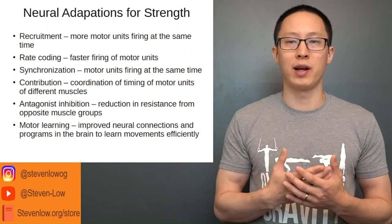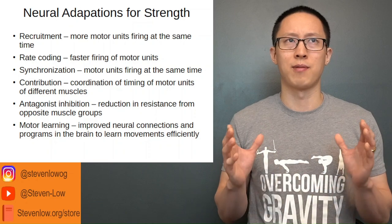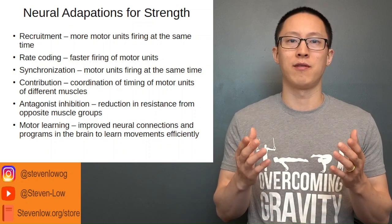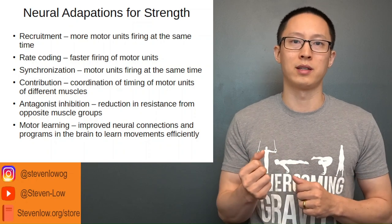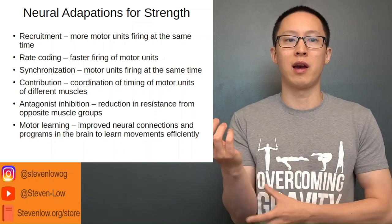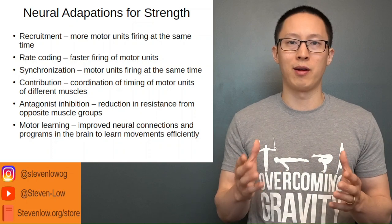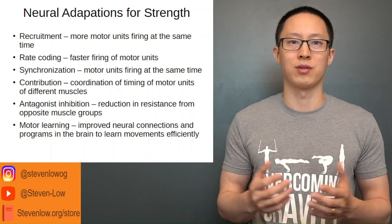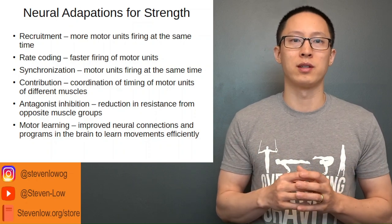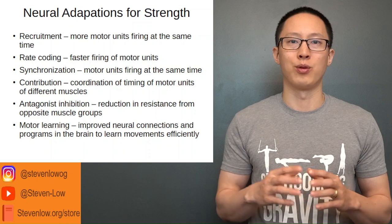Some common neural adaptations for strength: recruitment is one — in untrained individuals you recruit about 30% of your muscle fibers, and that percentage goes up as you strength train. Rate coding is the faster firing of motor units. In postural muscles, calves, and forearms, which have a greater percentage of slow-twitch fibers, rate coding is the primary way the body increases strength. This is why calf, forearm, and back training may use higher reps for hypertrophy — because those muscles have greater percentages of slow-twitch fibers, and higher reps fatigue them more effectively to produce gains.